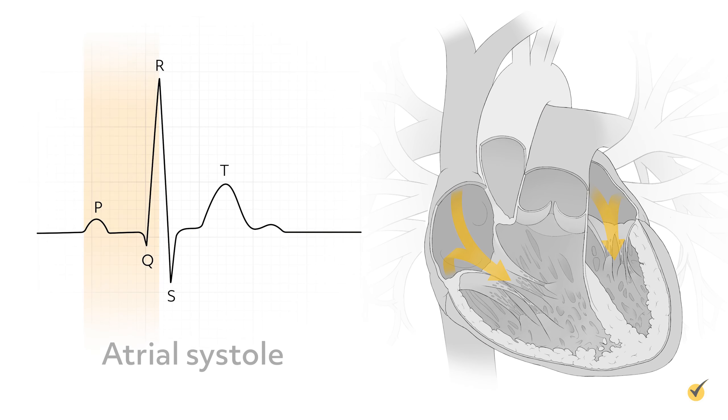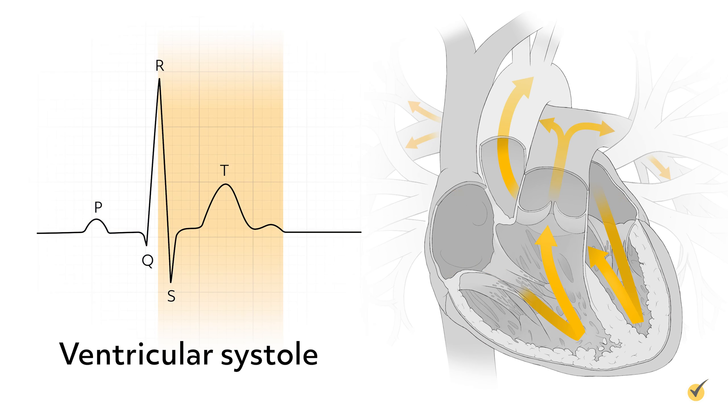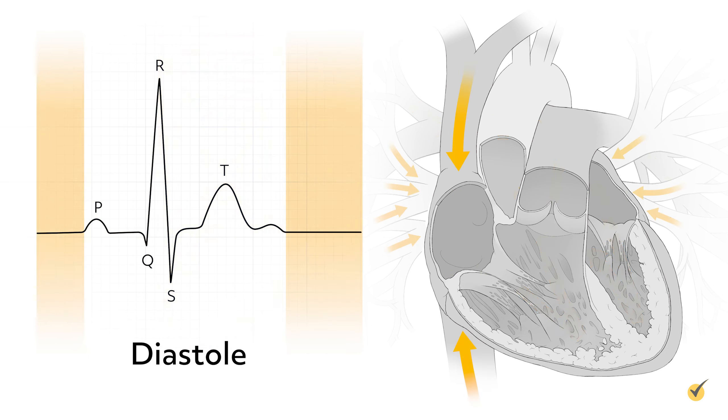Systole is the state when the atria or ventricles are contracting, and diastole is the state when the atria or ventricles are at rest. When we speak of systole and diastole, we most often refer to ventricular systole and diastole, although the atria go through the same cycles. Systole is one-third, and diastole two-thirds, of the normal cardiac cycle.